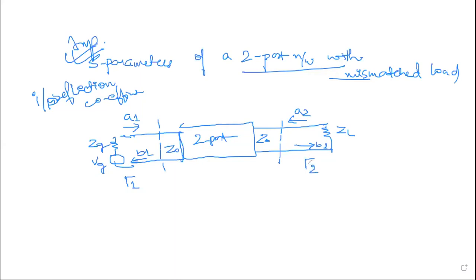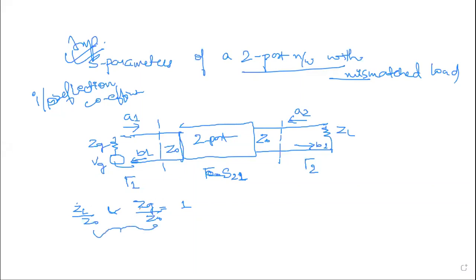Gamma 2 can also be represented as S21 — the scattering parameter from port 2 to port 1. For mismatched load, you consider a two-port network terminated by normalized load ZL. The generator impedance Zg is normalized. You write ZL/Z0 as normalized load and ZG/Z0 equal to 1. The load reflection coefficient equation: gamma 2 equals ZL/Z0 minus 1 divided by ZL/Z0 plus 1.